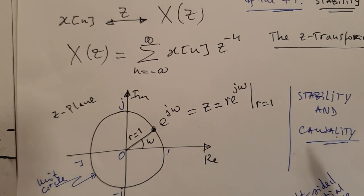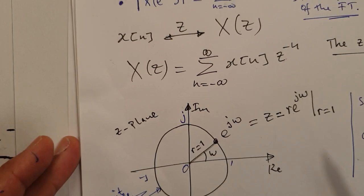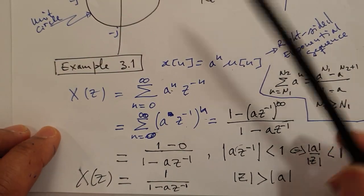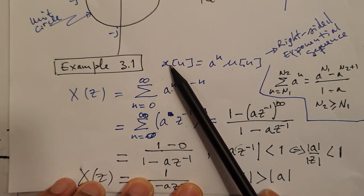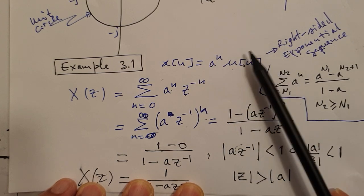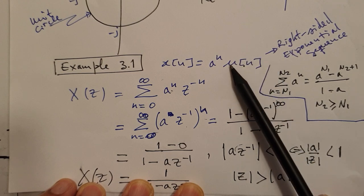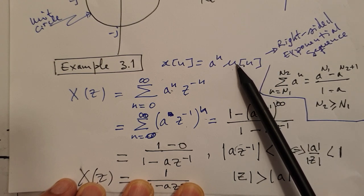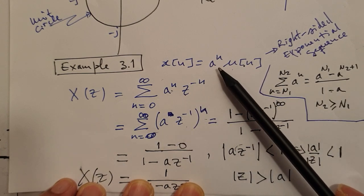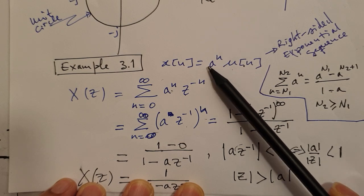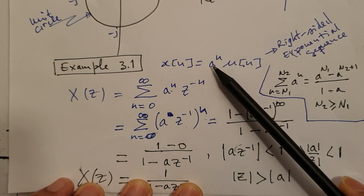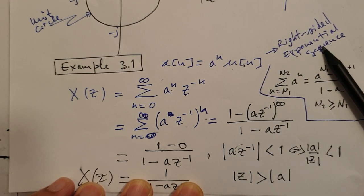I think it's better to jump straight to an example. This is example 3.1, where we will apply the Z-transform to this sequence. It's a right-sided sequence because when we multiply it by u of n, u of n is a unit step that starts at zero and moves towards infinity. We know where the sequence starts but not where it ends, so it ends at infinity. It is a right-sided complex exponential sequence.